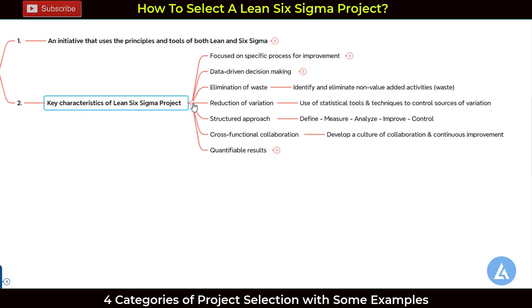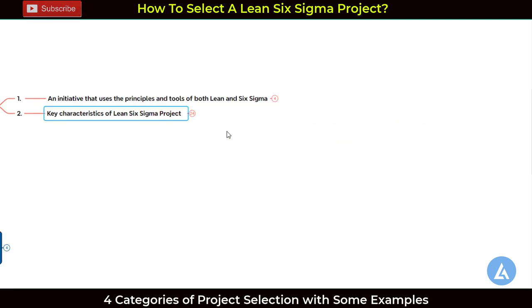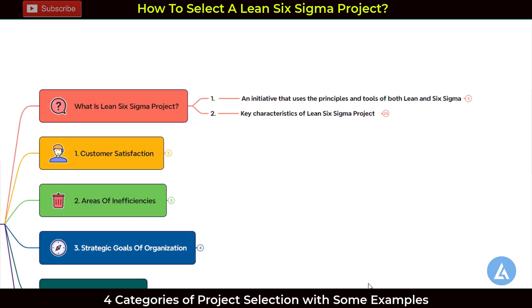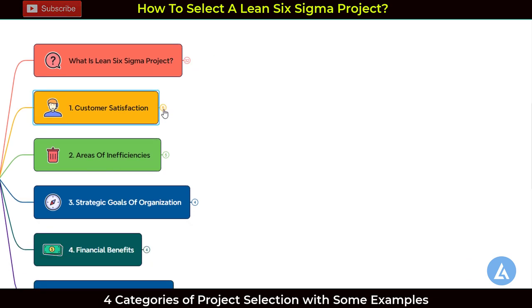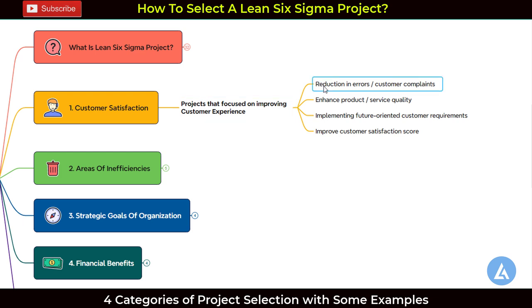Now let's go into detail on the four important categories in which we can initiate Lean Six Sigma projects. The first important category is about the customer — projects focused on improving customer experience. Examples include reduction in errors or customer complaints, enhancing product or service quality, and improving the quality of information supplied to customers in the information industry.